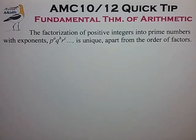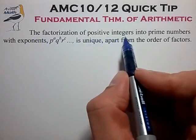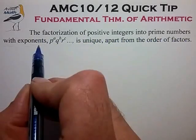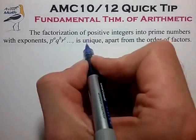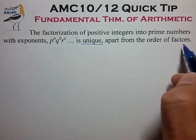Now you probably came across this topic in middle school, and there are several equivalent ways of stating this theorem, and one way is as follows. The factorization of positive integers into prime numbers with exponents p to the a, q to the b, r to the c is unique apart from the order of factors.